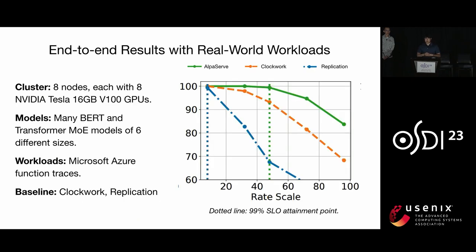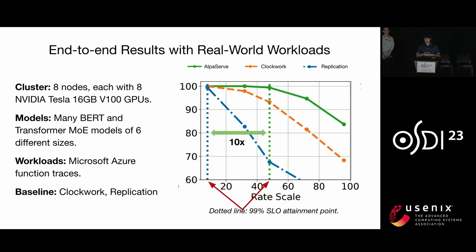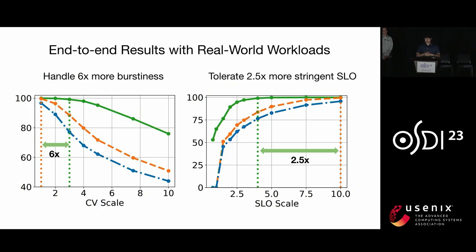We deploy AlpaServe on a 64-GPU AWS cluster to serve many BERT and transformer MoE models of six different sizes, using production traces released by Microsoft. We compare AlpaServe with Clockwork, the previous state-of-the-art solution for model serving, and the replication baseline. To serve the same workload with 99% SLO attainment, AlpaServe can tolerate 10x the request rate. Similarly, AlpaServe can handle six times more burstiness or 2.5 times more stringent SLO. You can check our paper for more experiments.